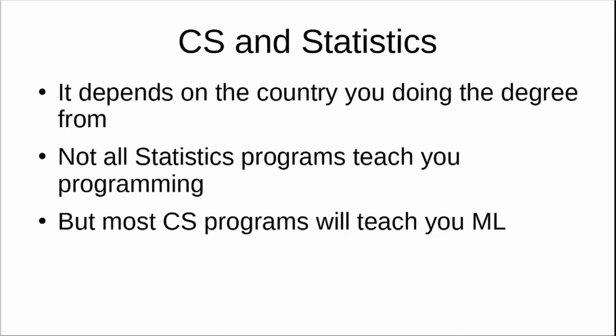The best undergrad degrees are computer science and statistics, and there is often confusion among students whether to choose computer science or statistics. It depends on the country you're doing the degree from — not all statistics programs teach programming. However, most computer science programs will teach you machine learning, so computer science has an edge over statistics when it comes to starting a career in data science.